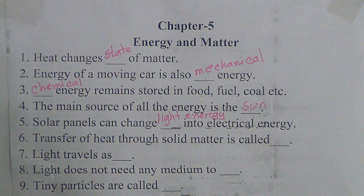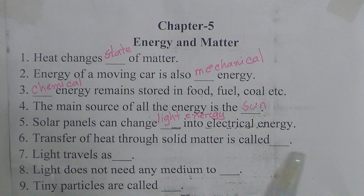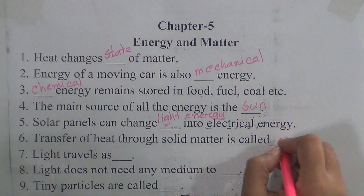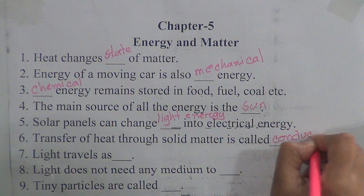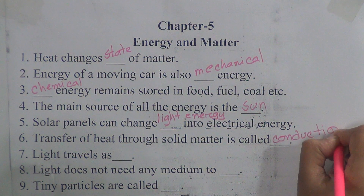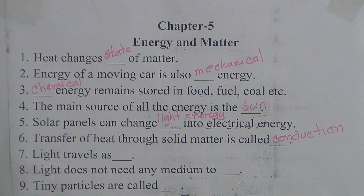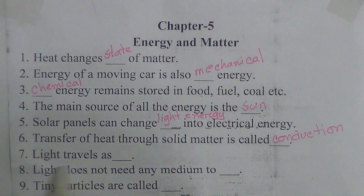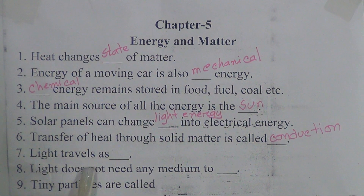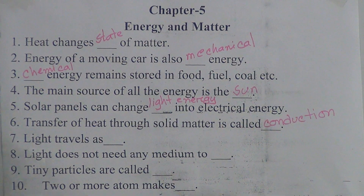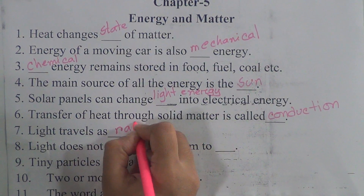Number six: transfer of heat through solid matter is called conduction. Number seven: light travels as radiation. We know light needs no medium for travel — there is no need of any media for light, so light travels as radiation.